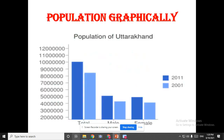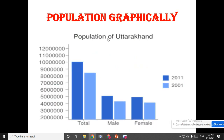Can you all see here? The population of Uttarakhand has been shown by a bar graph. This is known as a bar graph. It shows the total male and female population, according to our 2011 census. This is called a census — they do a survey and the population has been calculated.